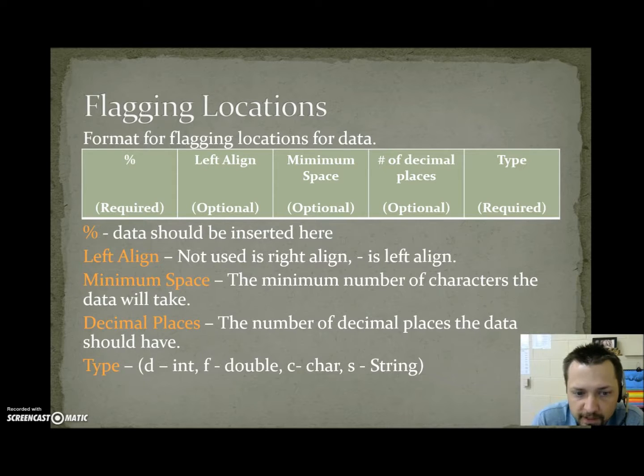D is used for int, and the reason we use D instead of I is for decimal integer, an integer in base 10. F is used for double because F stands for floating point, the decimal place in a number that has decimal places. C is for char and S is for string.